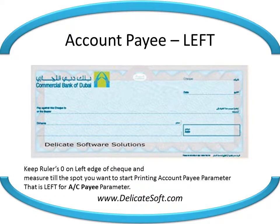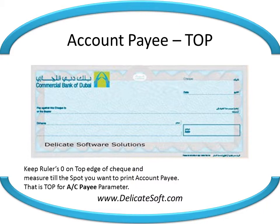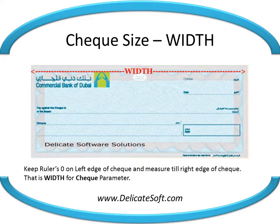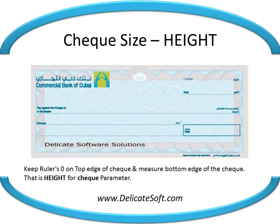Keep the ruler's zero on the top edge of the check and measure till the place you want to start printing account pay — that is the left for AC pay parameter. Then keep the ruler's zero on the top edge and measure till the right edge of the check — that is the width for check parameter. Finally, measure from the top edge down to the bottom edge of the check — that is the height for check parameter.